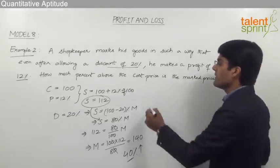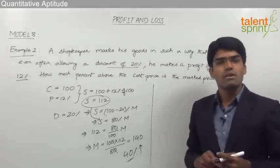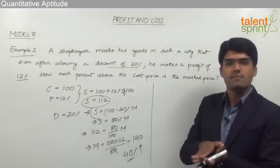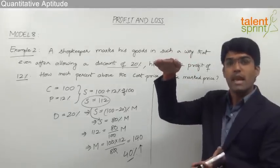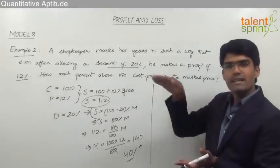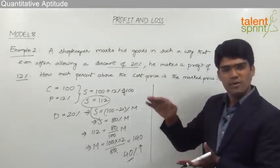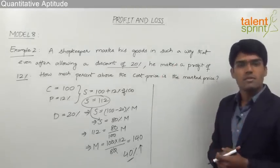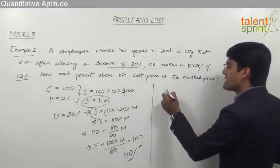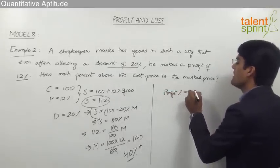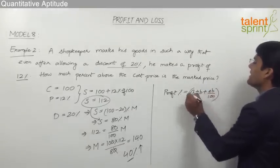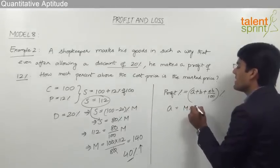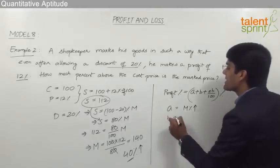This question can also be solved using the concept of net or effective percentage. The cost price is marked up by some percentage to get the marked price, and on the marked price a discount is given, resulting in a profit. The profit percentage is the effective result of the mark-up percentage A and the discount percentage B, using the formula: effective % = A + B + (AB/100), where A is the mark-up percentage and B is the discount percentage.